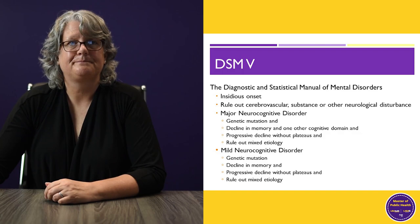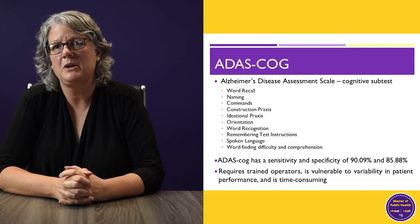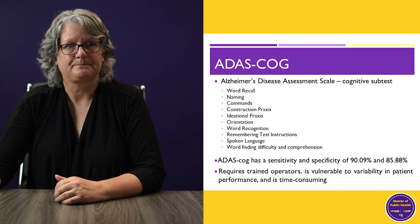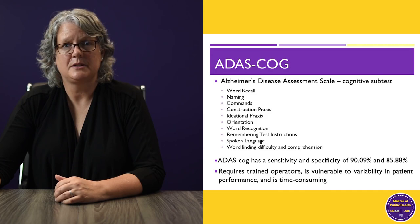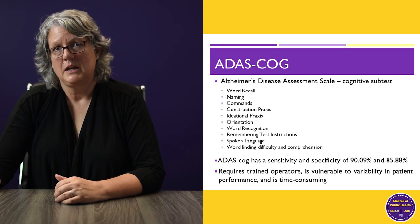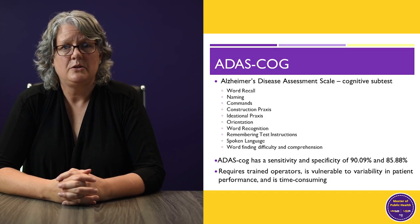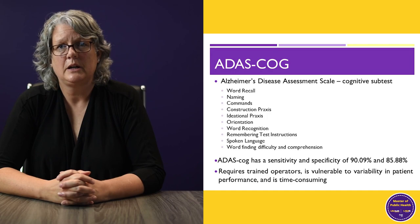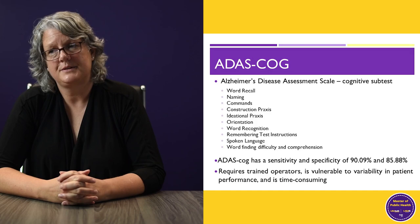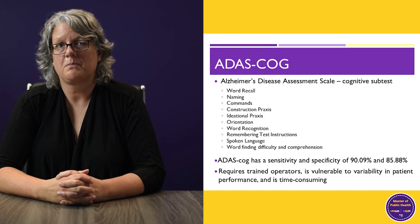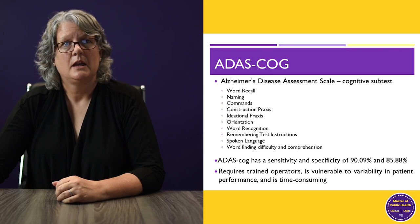There's the ADAS-COG — the Alzheimer's disease assessment scale — which we use for research purposes. We give people a whole list of tests covering different types of memory and executive function. This test has sensitivity of 90% and specificity of 86%, meaning it can detect people who do have the disease and doesn't falsely label people who don't. The problem is you need training to administer it, it's vulnerable to variability in patient performance — we all know Alzheimer's patients have good days and bad days — and it's also time consuming. Someone with a lot of memory trouble can take several hours to complete, so it's also not terribly practical.